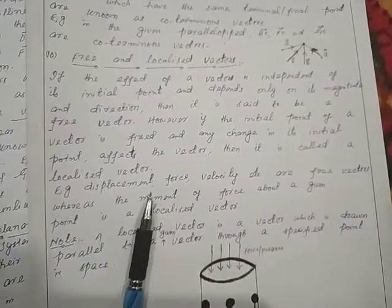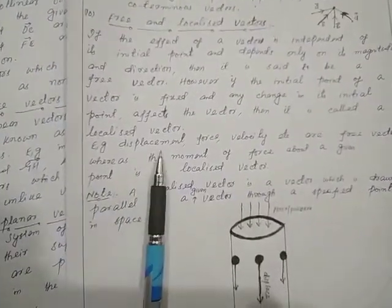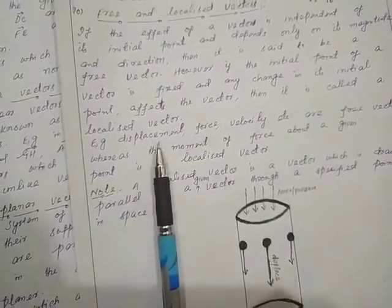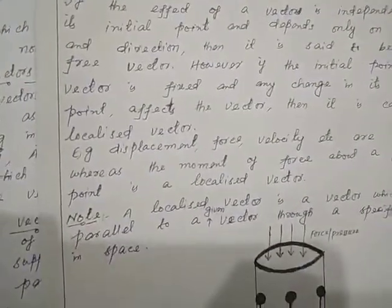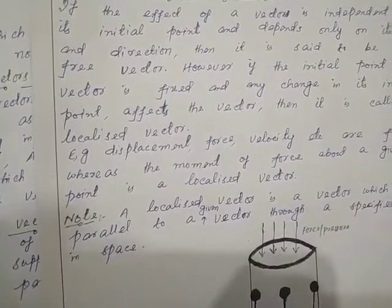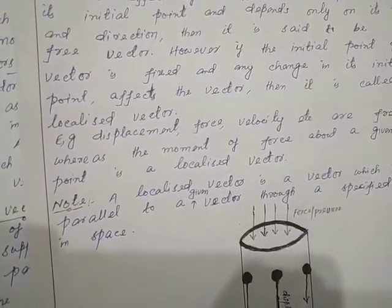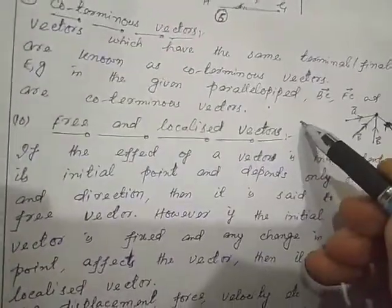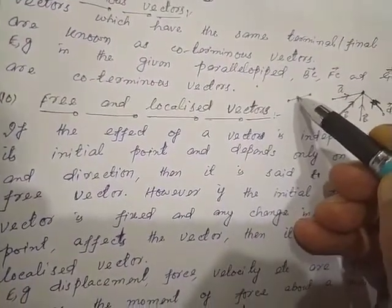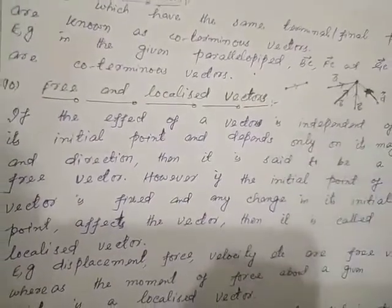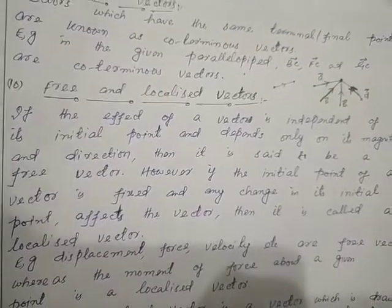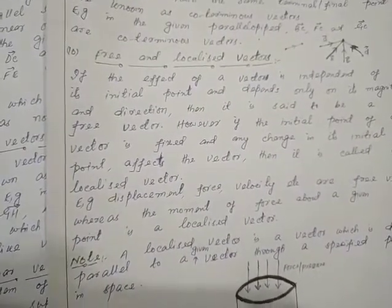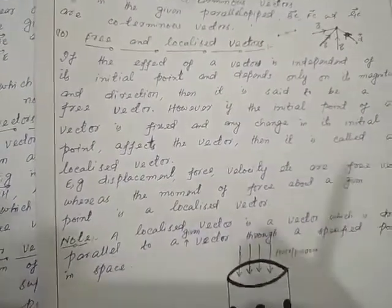For example, displacement, force, and velocity are free vectors. Displacement is the shortest distance between two points — it doesn't matter where you place it; it is free to exist anywhere and does not depend on its initial point. That is why displacement is a free vector.